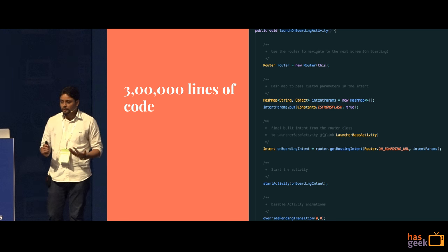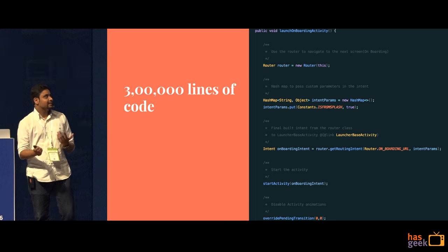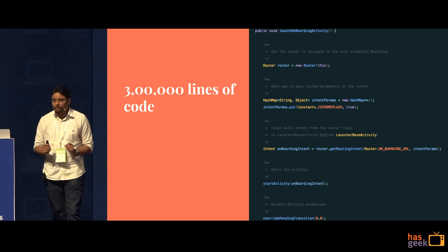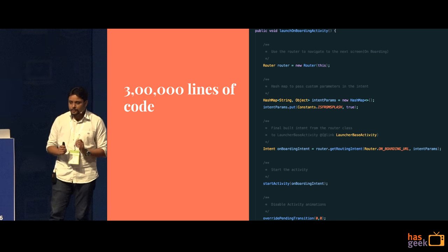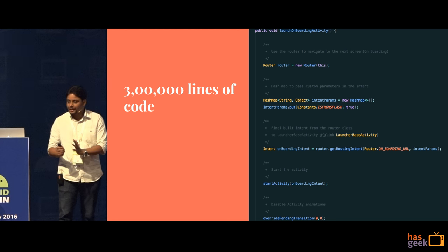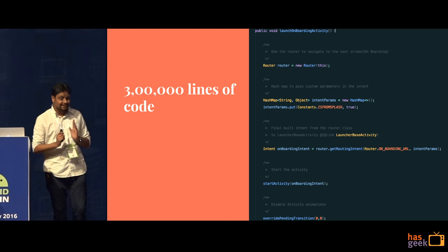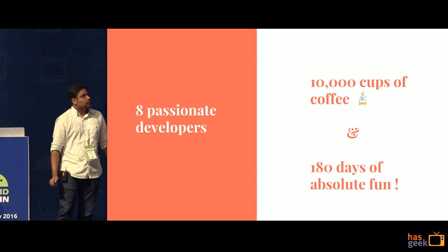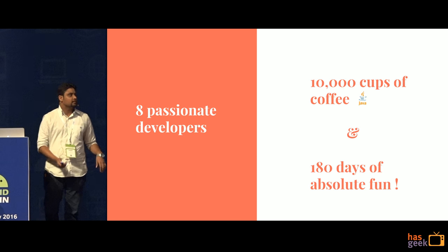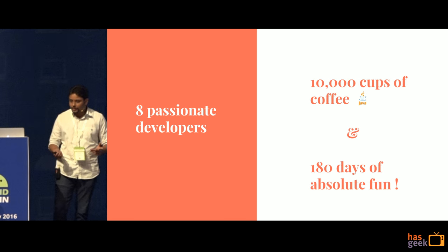Just to give you an idea even before I delve into the details — the new rewrite took approximately three lakh lines of code just to replicate the existing app. The new app has three lakh lines of code. It took eight Android developers around 10,000 cups of coffee and six months of time to get this done.